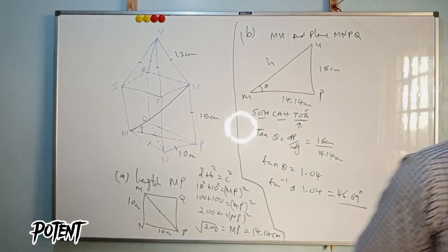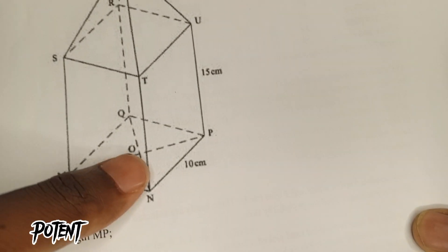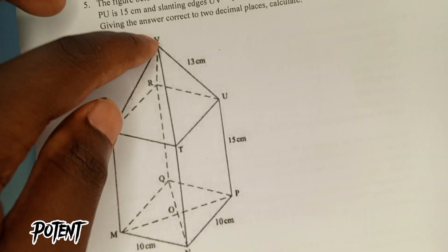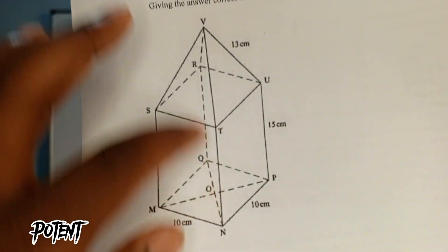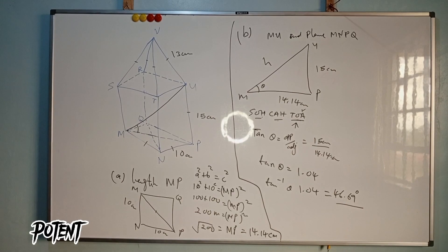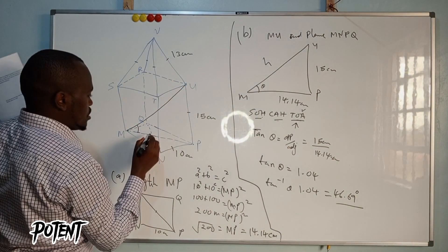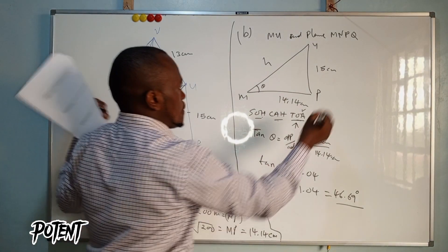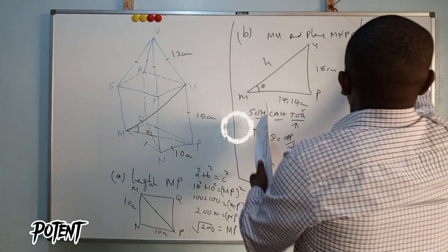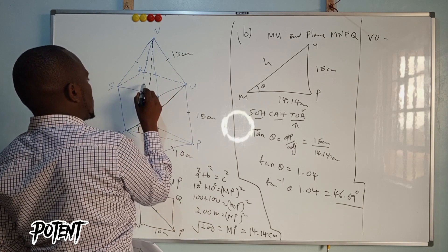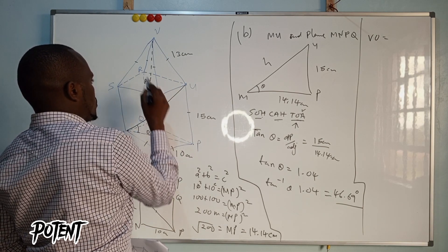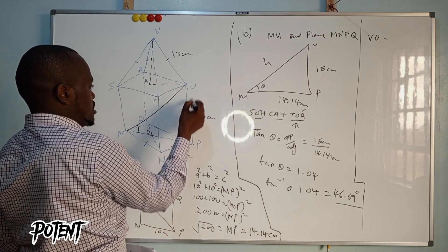Part C asks for the length VO, where V is the apex and O is the center of the base. The length VO equals VA plus AO, where AO is 15 centimeters. We need to find VA first. Half of MP is 14.14 divided by 2, which equals 7.07 centimeters.